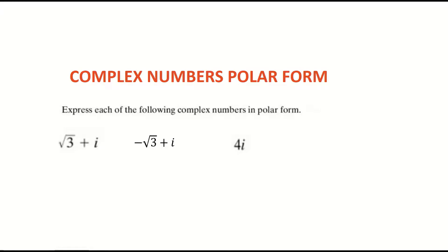In this video, we're looking at complex numbers and changing complex numbers from rectangular form into polar form. We have three examples: in the first one, A is a positive number, so A plus Bi. In the second example, A is a negative number, so it's done slightly differently. And in the third one, we don't know A. So three slightly different examples to look at here.